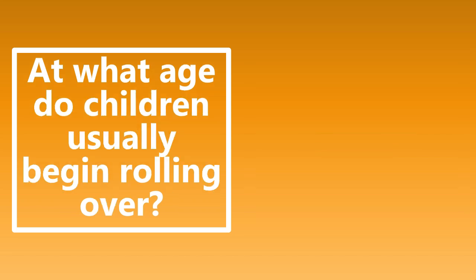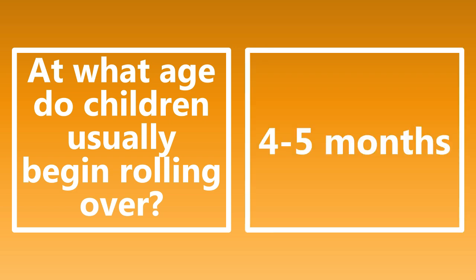At what age do children usually begin rolling over? This is typically around four to five months. This milestone is particularly important in cases of non-accidental trauma, also known as child abuse. The classic vignette is parents bringing in a child, saying they fell off the bed, but the child is only two or three months old. If you know these developmental milestones, you'd know they probably can't roll over until about four to five months — which raises a red flag.